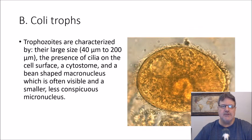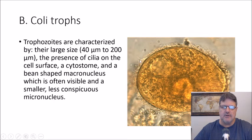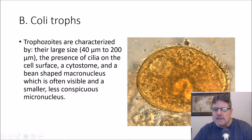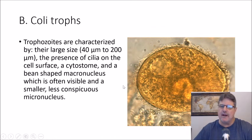The trophozoite of Balantidium coli is incredibly large — up to 200 microns — and it's really easy to see the cilia, which are its means of motility, going around it. It has the large kidney bean-shaped macronucleus. The micronucleus is harder to make out. But you can't miss it, and as mentioned, this is the only pathogenic ciliate to human beings.